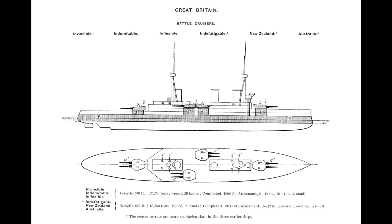Dreadnought had 10 guns in five twin turrets but could only bring eight — four turrets — to bear on any broadside. The German Nassau and Helgoland classes had 12 guns but with two pairs of wing turrets in a hexagonal layout, also limited to eight guns per broadside. The en-echelon idea, revived from some ironclads, meant that over limited angles you could theoretically fire all four turrets on the broadside. In practice this was very limited and usually resulted in blast damage to the ship, while the limited angle restricted maneuverability compared to an all-centerline setup.